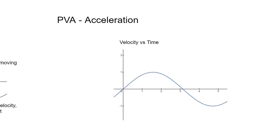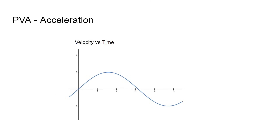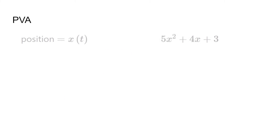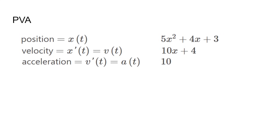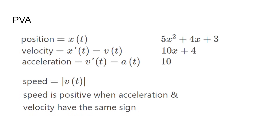Acceleration is the rate at which velocity changes. For example, a particle moving from 0 to 3 in 1 second then 3 to 7 in the next second has an acceleration of 1 meter per second squared. The velocity increased because of a positive acceleration. We can tell the acceleration by taking the slope of the velocity graph. When dealing with PVA in function form, velocity is the derivative of position and acceleration is the derivative of velocity. In this example, the position function is x(t) = 5x² + 4x + 3, so v(t) would be 10x + 4 and a(t) is 10. Sometimes we also talk about speed, which is the absolute value of velocity. Speed is increasing when velocity and acceleration have the same sign. If one was negative, then the speed would be decreasing. If both are negative, the speed is also increasing.